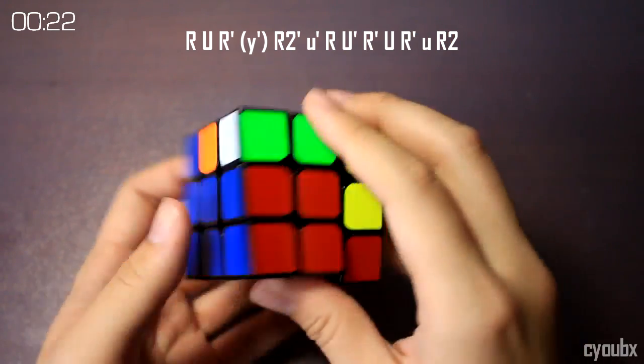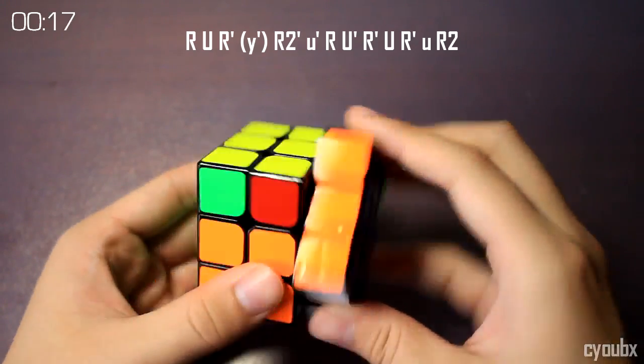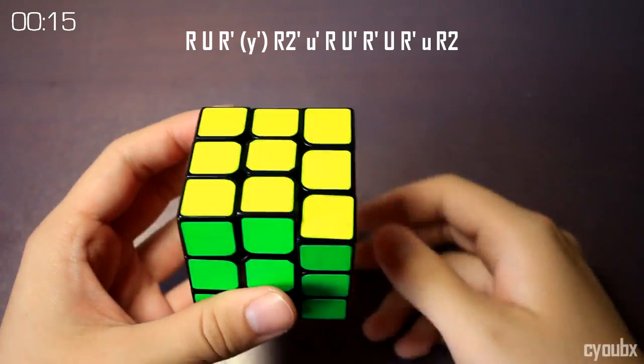The last tip I have for this particular algorithm is that speed is not a necessity. If you turn too quickly, it's possible you'll run into a catch or a lockup, and your cube might actually fall out of your hand.